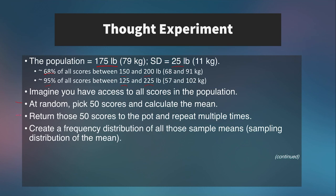If the population mean is 175, most of the sample means will fall near 175, though occasionally you'll get means a little higher or lower, and very rarely a lot higher or lower. This creates a frequency distribution — more scores fall towards the middle because the overall population mean is 175. So you'd be plotting a normal-looking distribution of sample means clustered around 175.